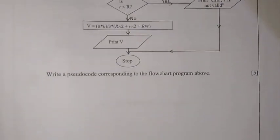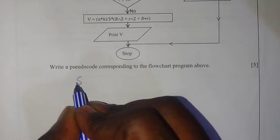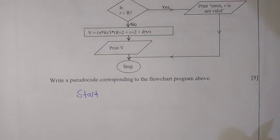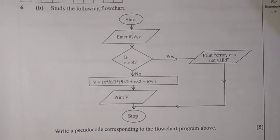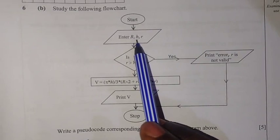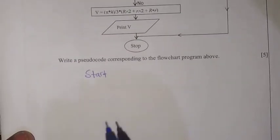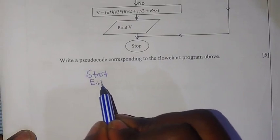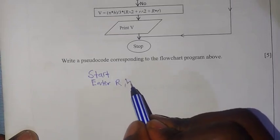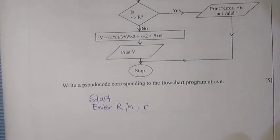To write the pseudocode, we start with START. After that, the next step in the flowchart shows the inputs, so we write: ENTER R, ENTER h, and ENTER r — the bigger radius, the height, and the smaller radius.